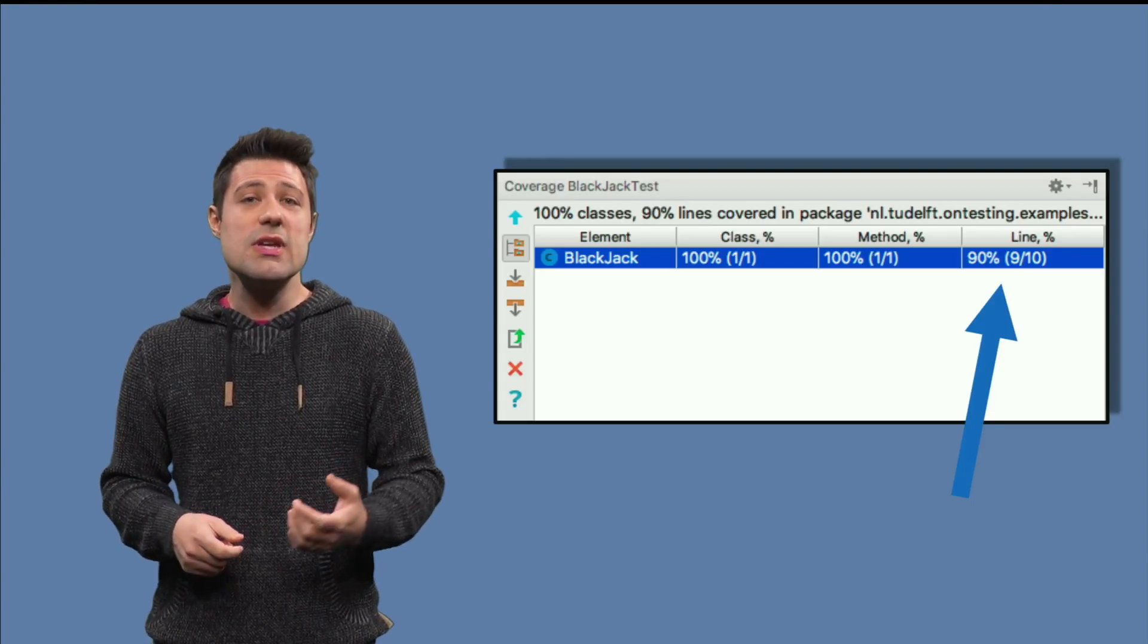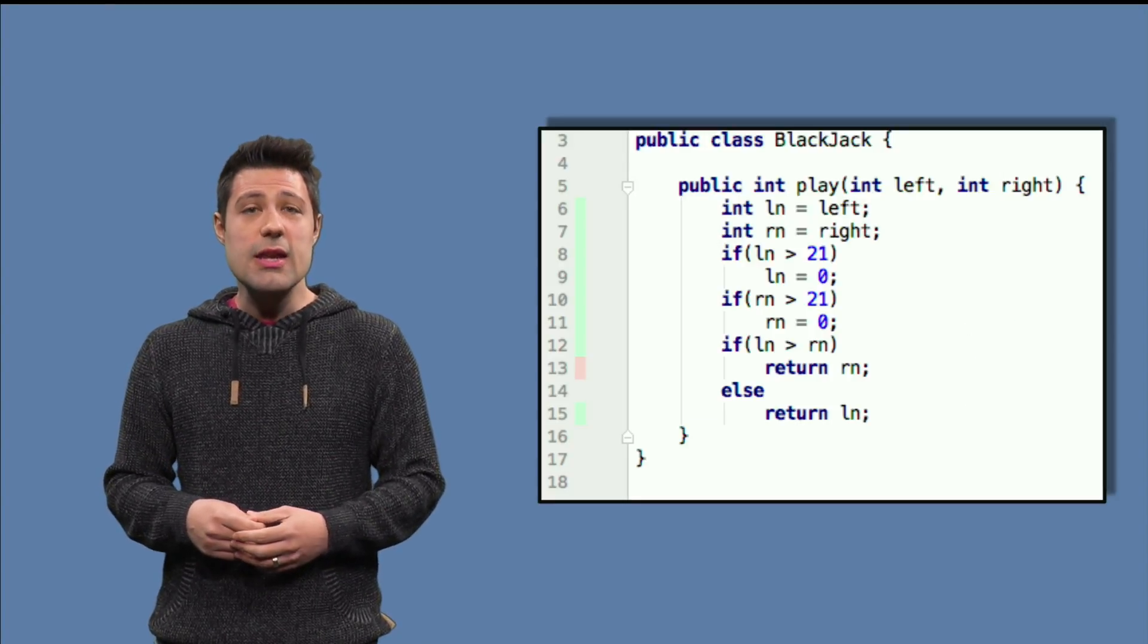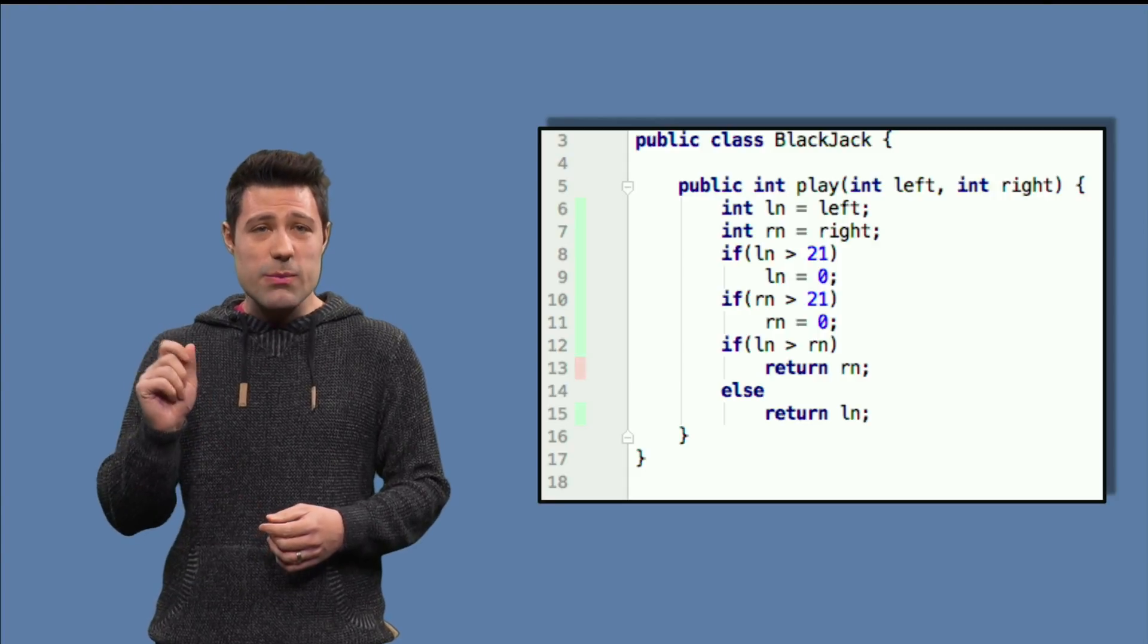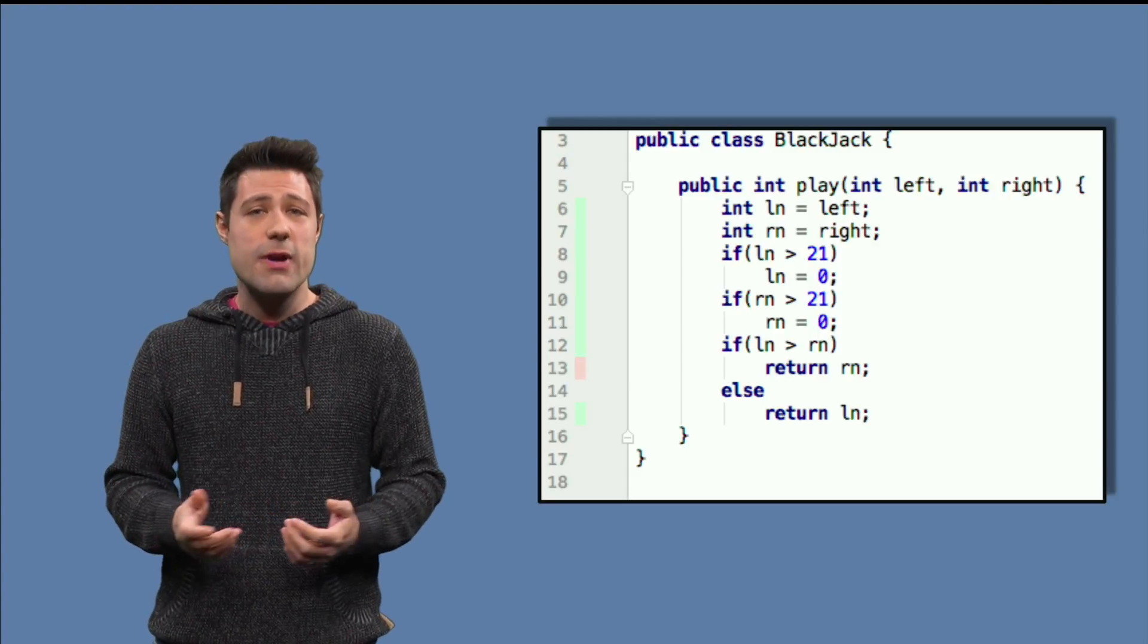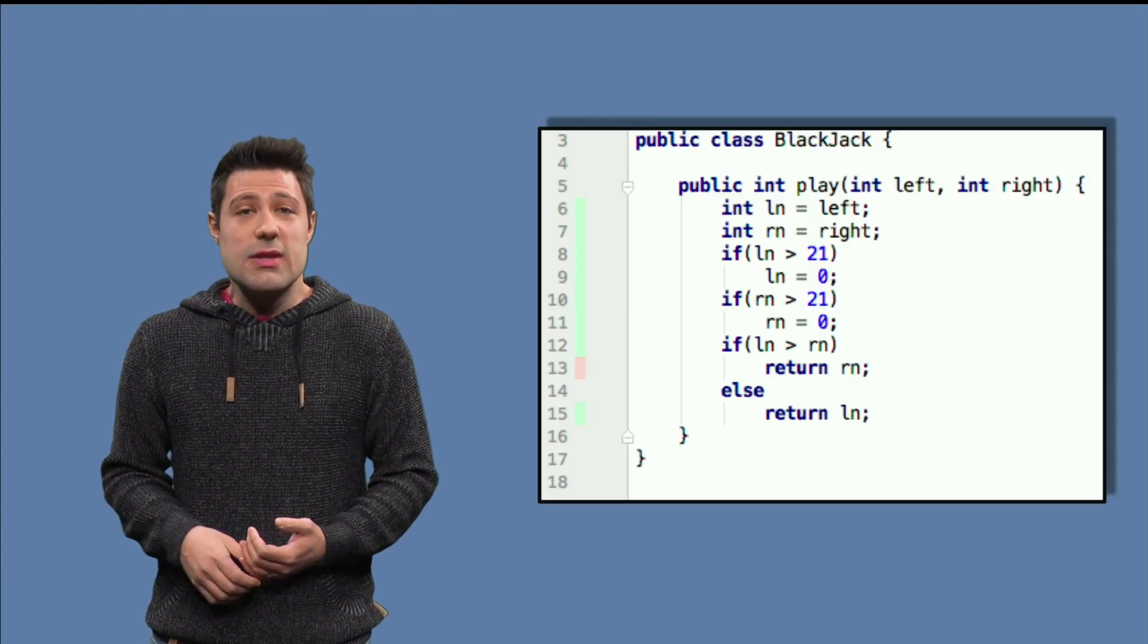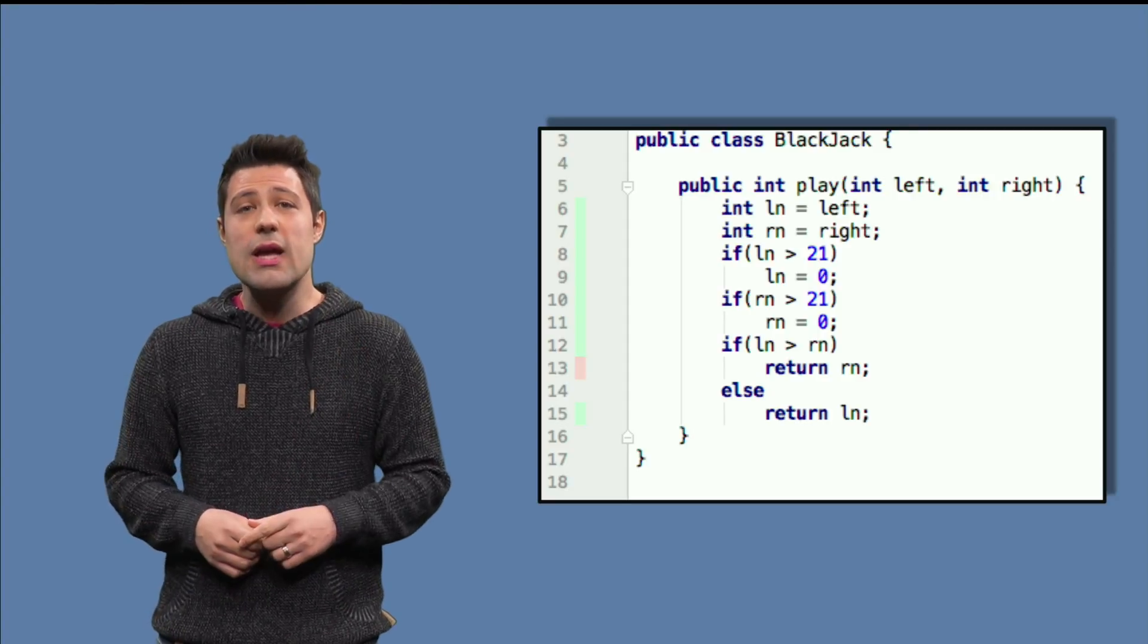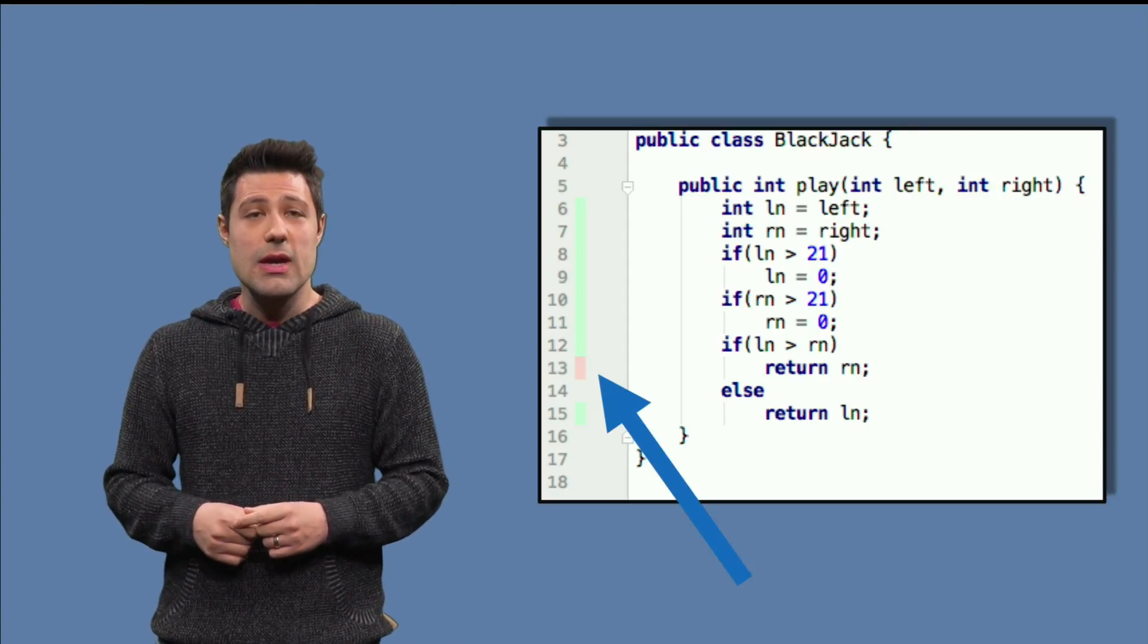We can even see it line by line. If you go back to the editor and open the blackjack class, IntelliJ shows, near the line numbers, colors like green and red. Green means that the line was covered, and red means that the line was not covered. And we can see that we missed one line, line 13.